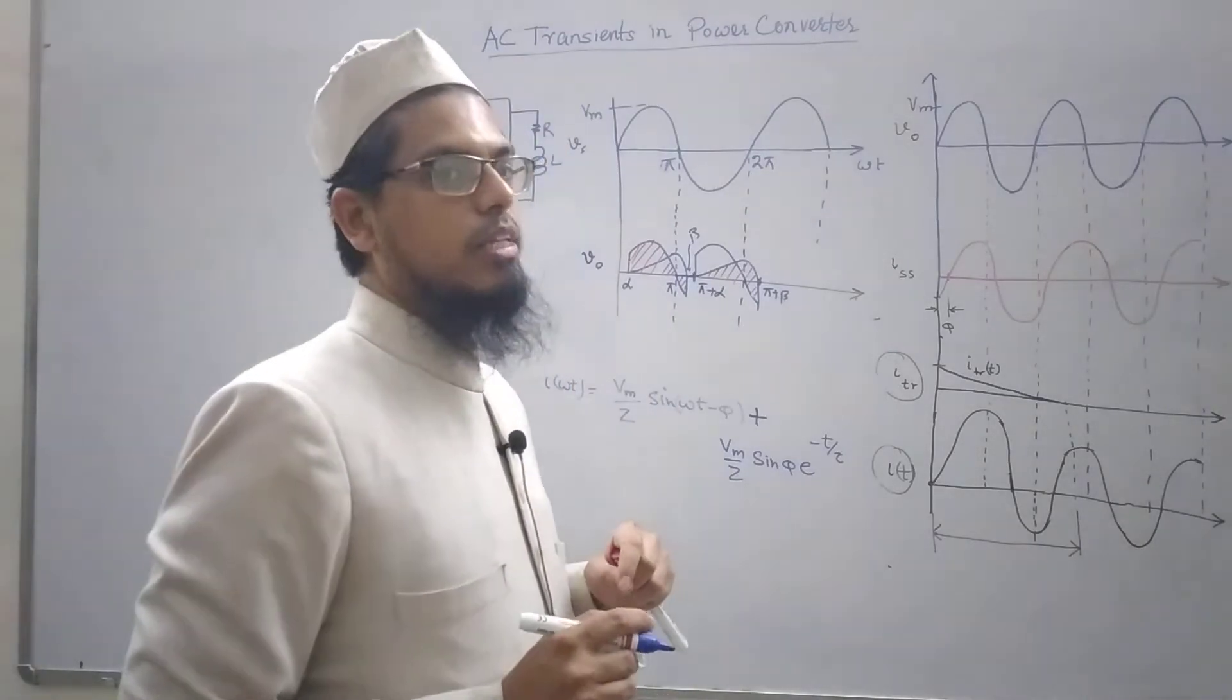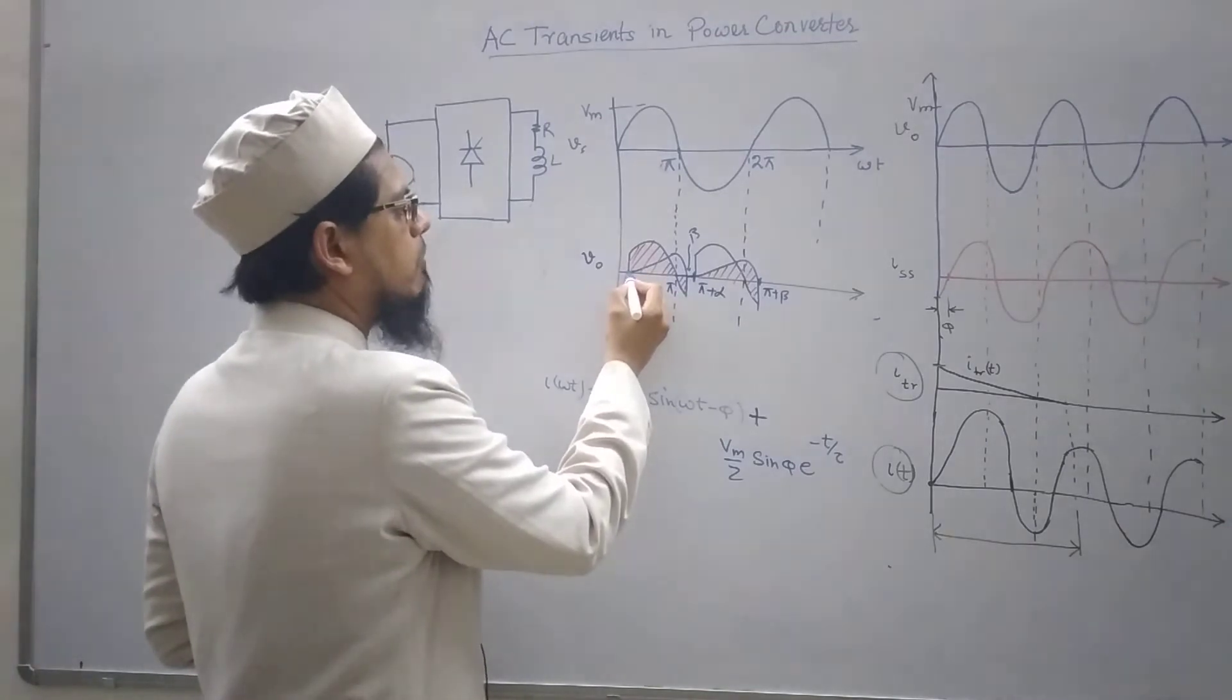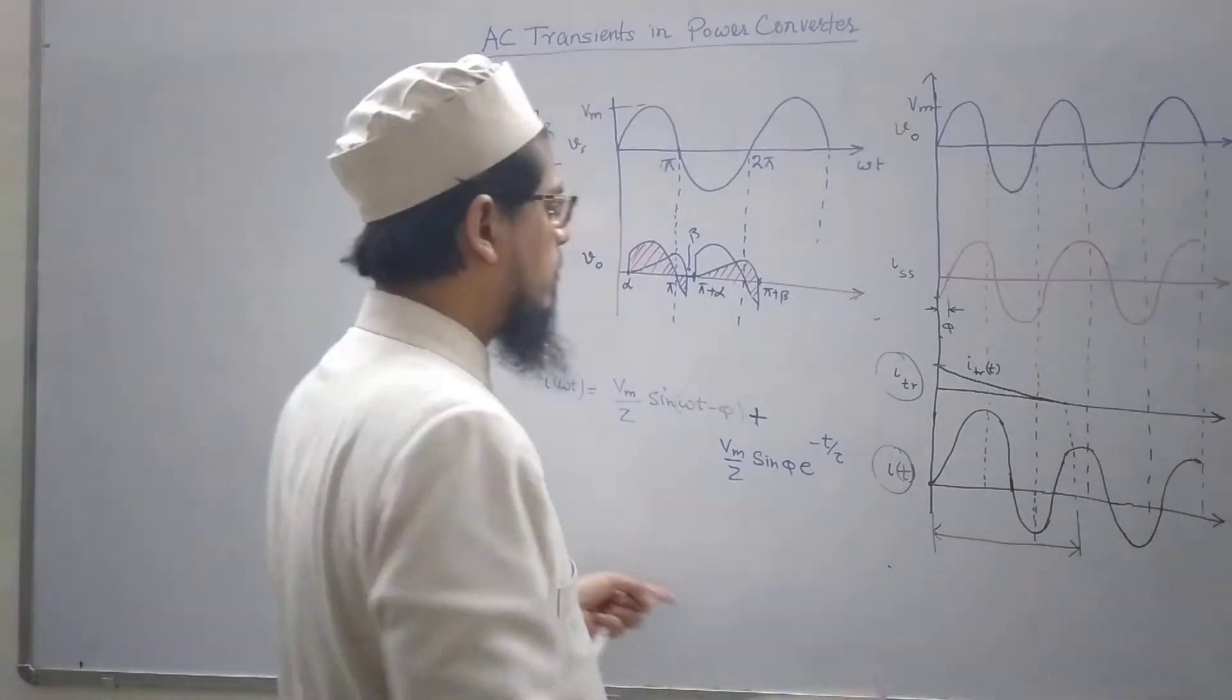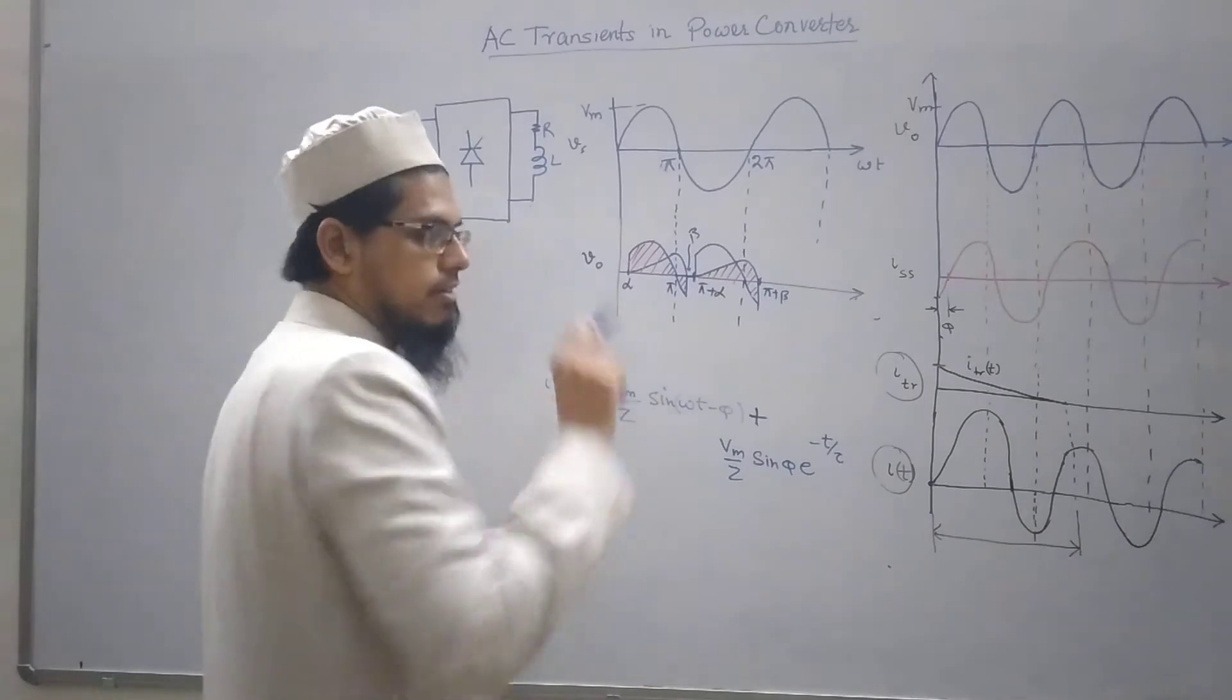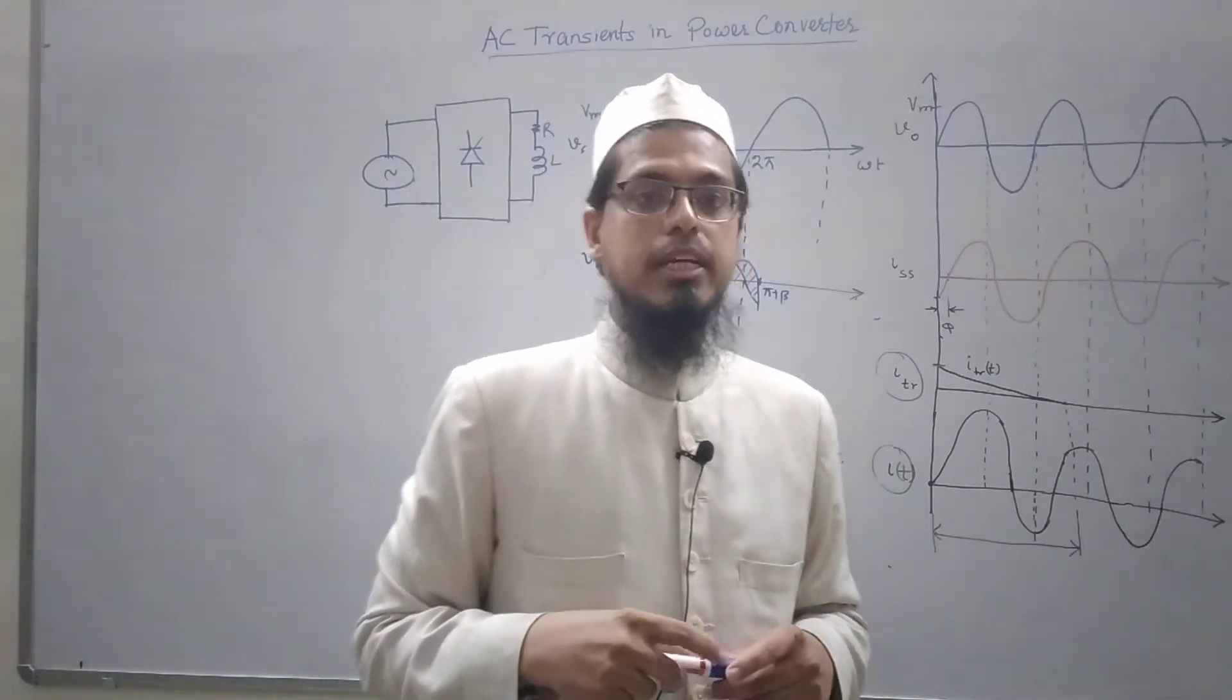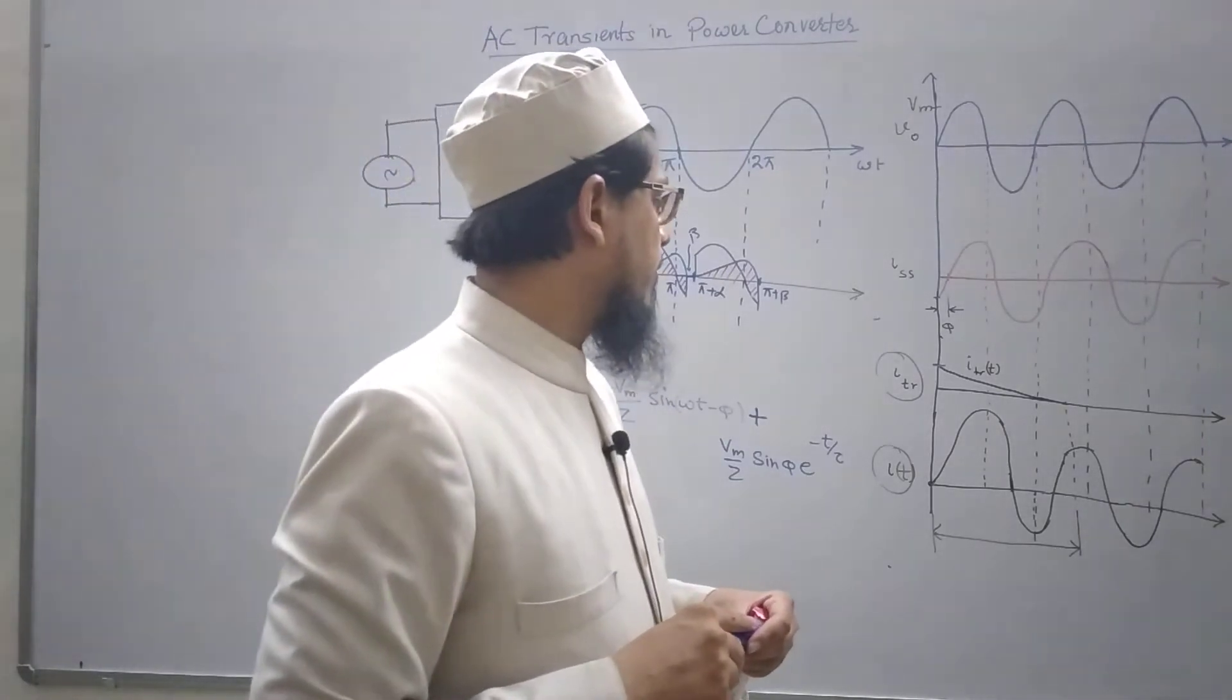No, there will be a difference because you could see here that now the starting point is omega t equals to alpha and not omega t equals to zero. So this expression of current will not be valid in this case. You have to again find out the expression of current in this case and that is not difficult, we can easily find it out.